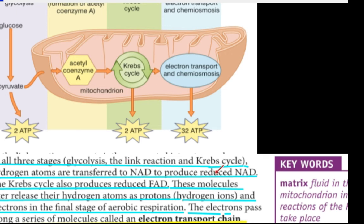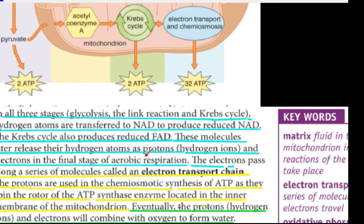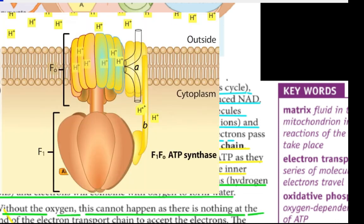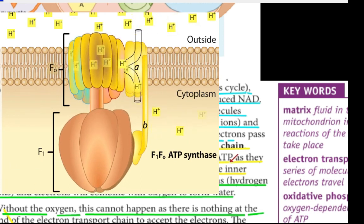The Krebs cycle also produces reduced FAD. Hydrogen atoms and electrons are released in the final stage of aerobic respiration, called electron transport chain and chemiosmosis. Protons are used in chemiosmosis for the synthesis of ATP as they spin the rotor of ATP synthase, an enzyme located in the inner membrane of the mitochondria.